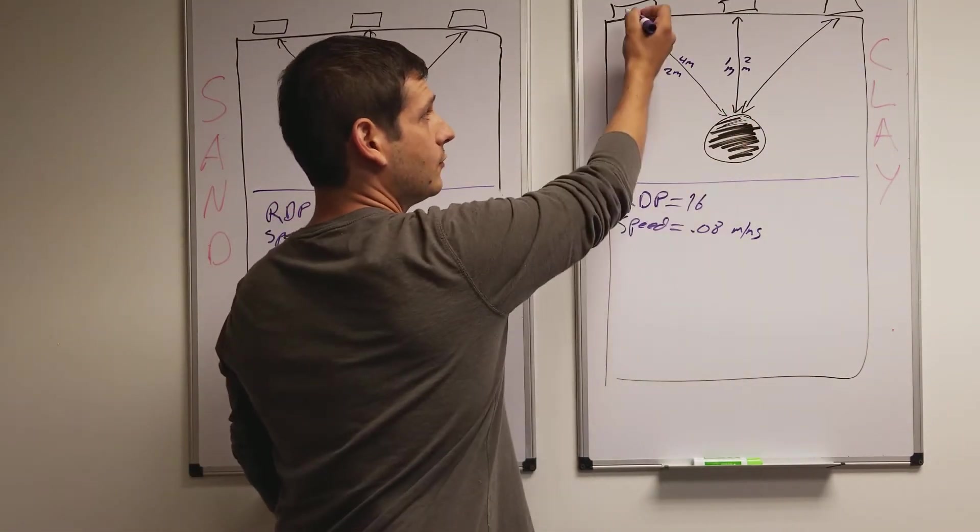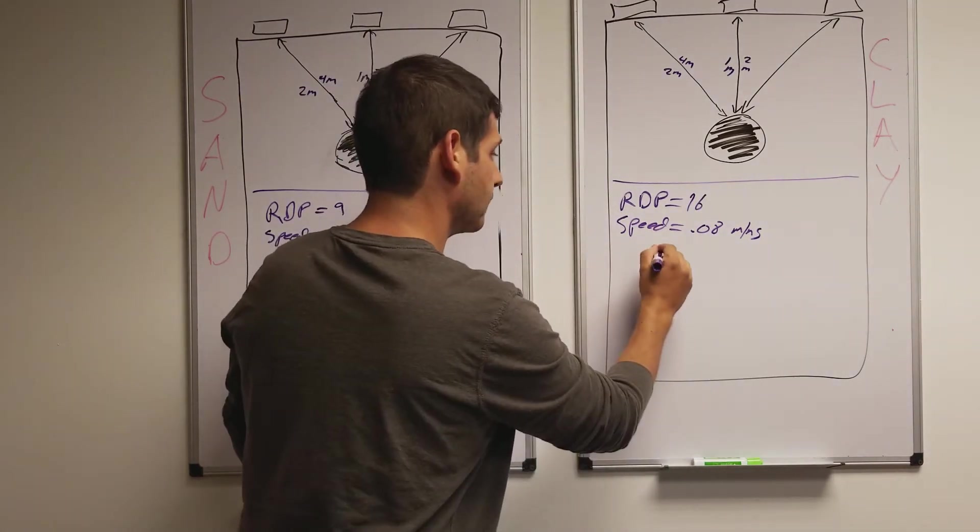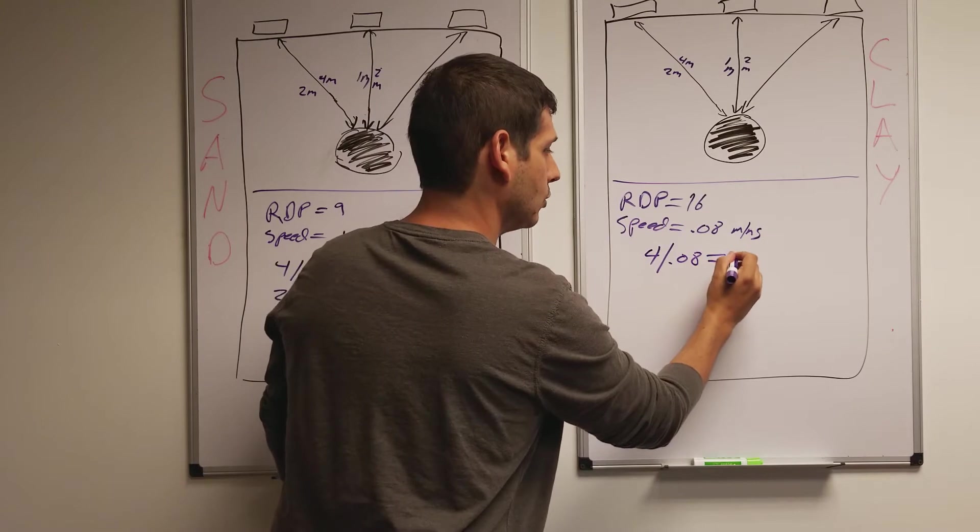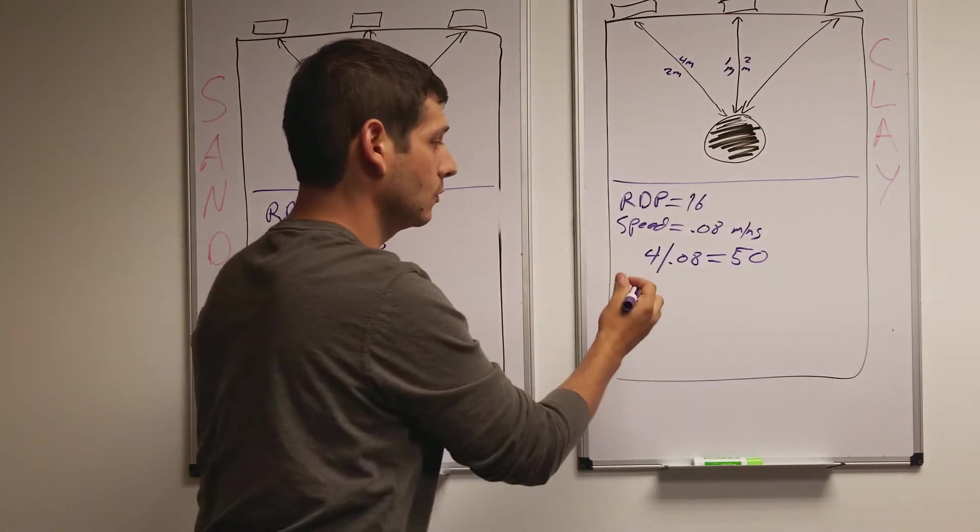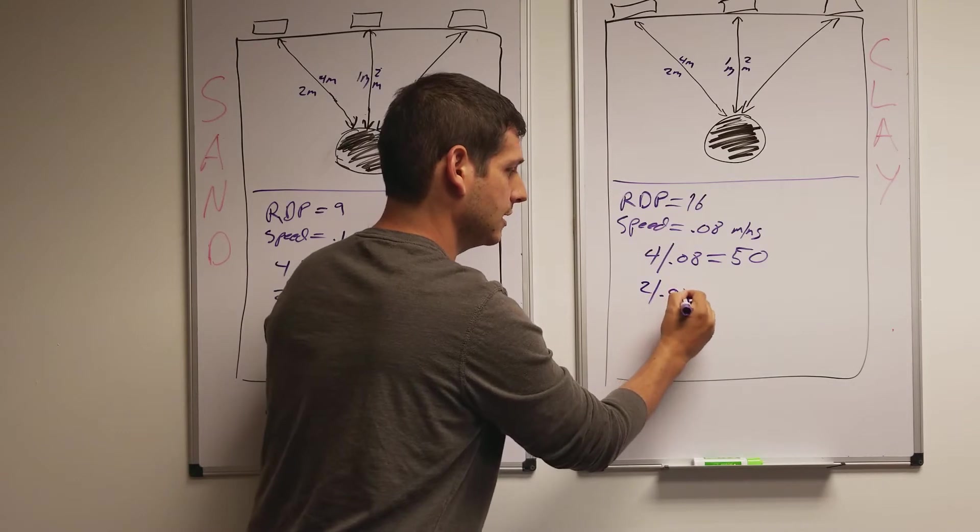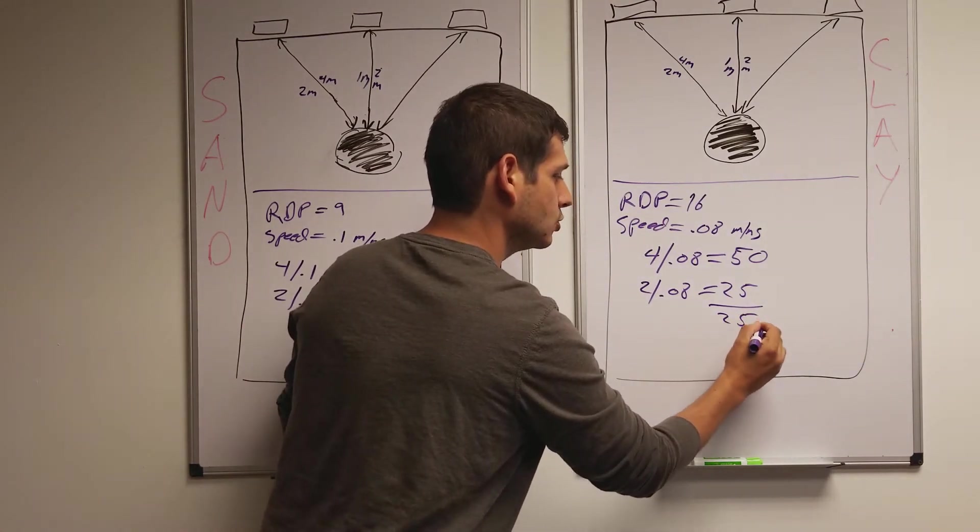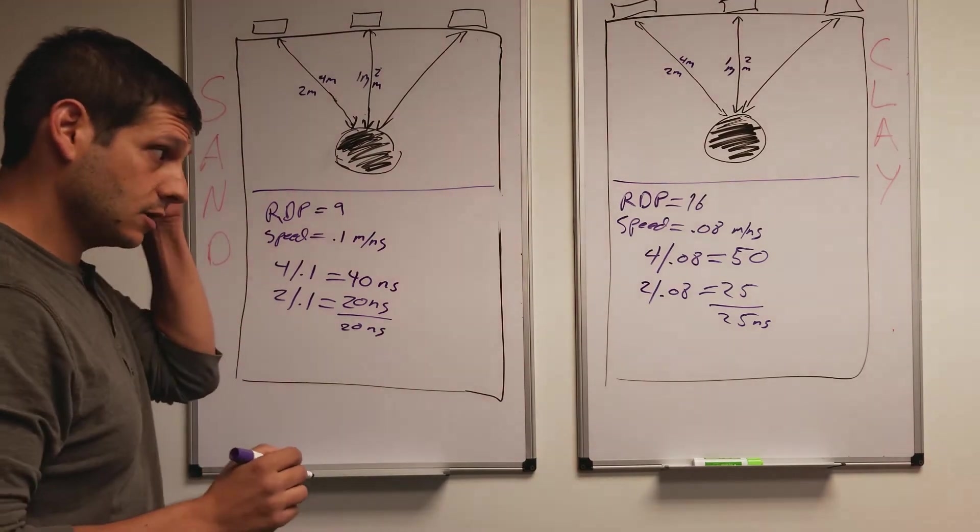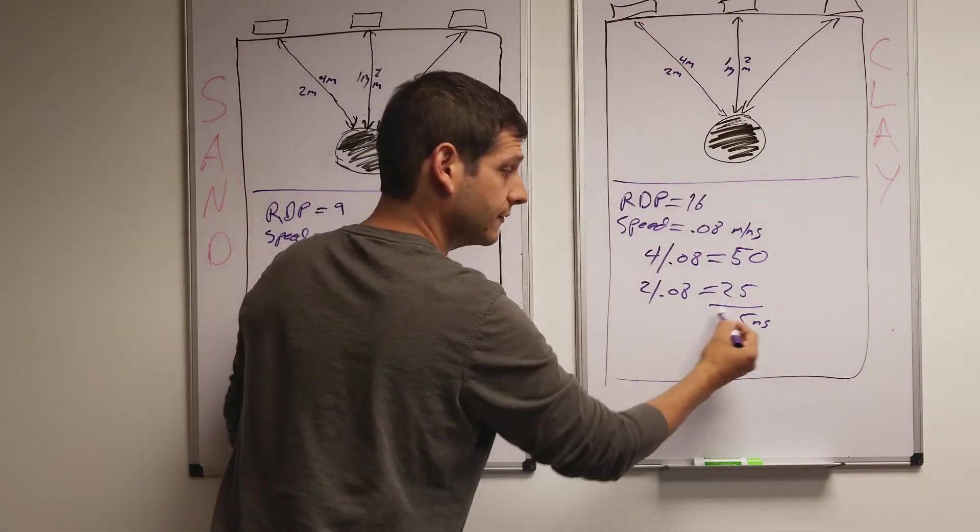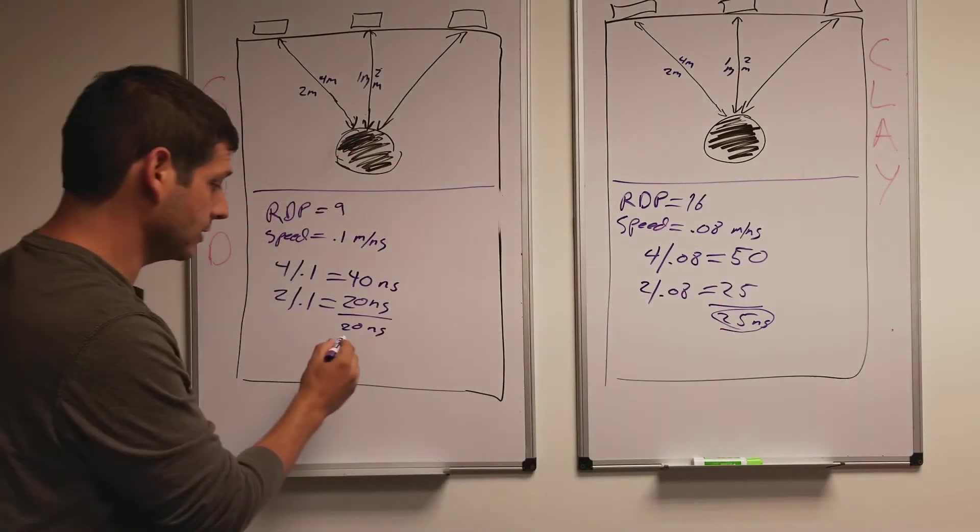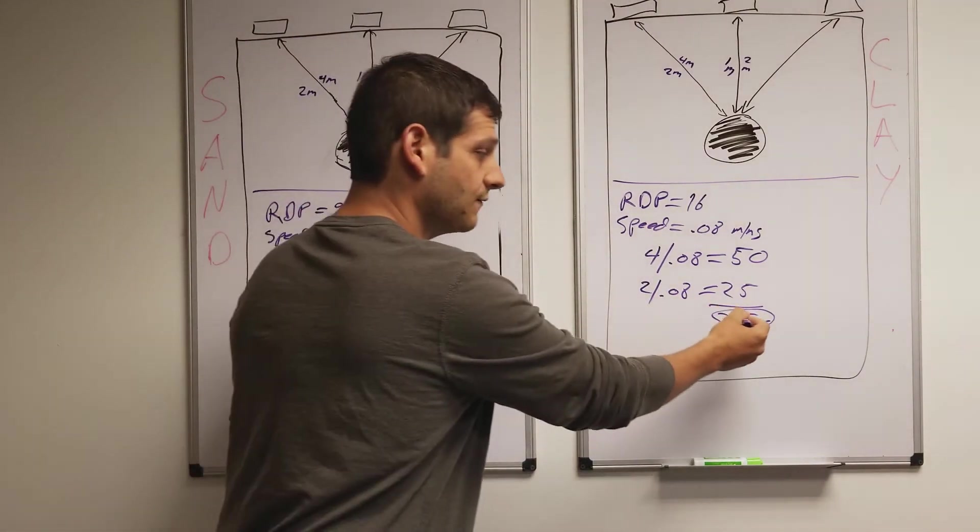So, how long is it going to take to travel from antenna to target and back when it has a round trip of 4 meters? Well, let's take that again. That's 4 divided by 0.08 is going to equal 50. So, it equals 50. What about when it's directly on top of it? Well, that's going to be 2 divided by 0.08, which is going to equal 25. So, the difference between them is 25 nanoseconds. And here, it's 20 nanoseconds. So, there's a greater difference when you're in the clay from when you're approaching it compared to when you're on top of it. It's a greater difference in the clay than there is in the sand.